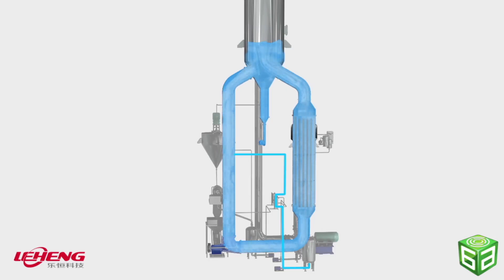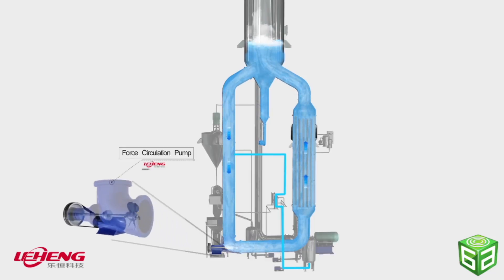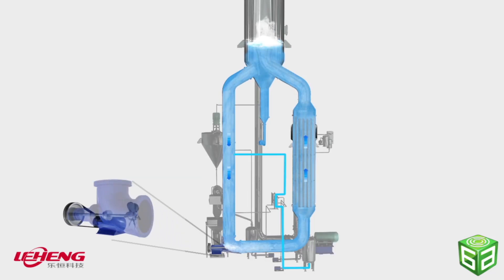The forced circulation pump will be switched on as the liquid level reaches a desired level in the crystallization separator, so that the liquid circulation commences.